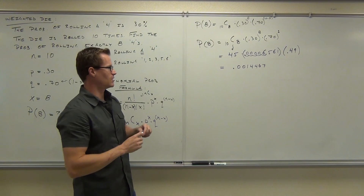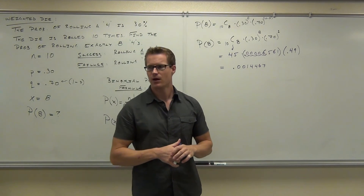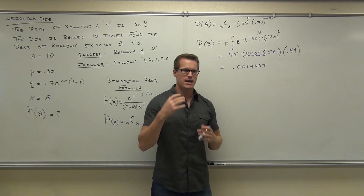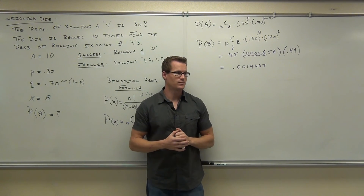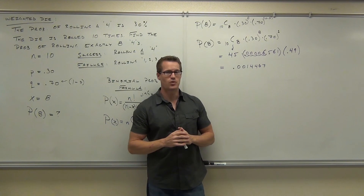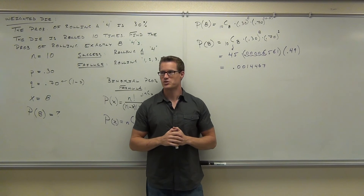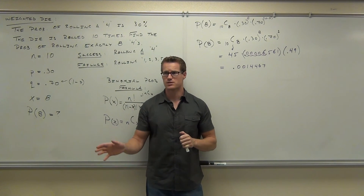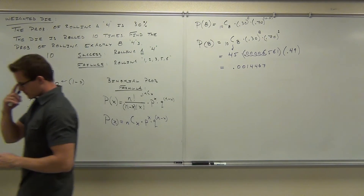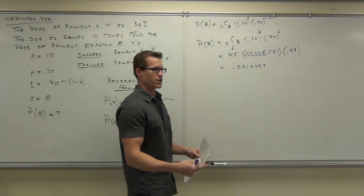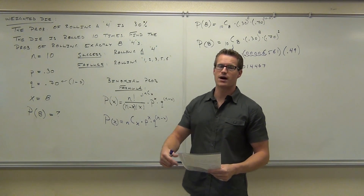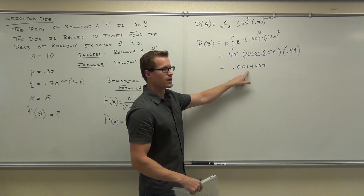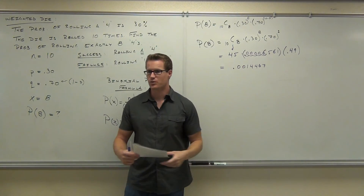So what does that even mean? If you roll a die ten times, what is the probability you're going to get exactly eight number fours? It's about 0.14 percent — pretty rare. What distinguishes rare from usual versus unusual? If the probability is less than 0.05 — that's 5% — it is considered an unusual event. This is very, very unusual.